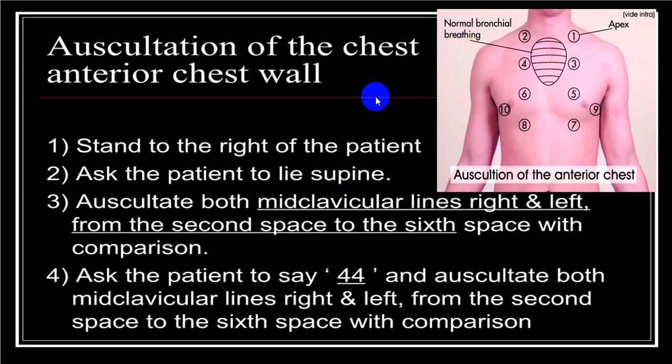Initially, while the patient breathes quietly, we look for: first, whether breath sounds are present or absent, or if intensity is increased. Second, we look at the character of the sound — whether it is normal vesicular breathing, bronchial breathing, or within bronchial breathing whether it is tubular or amphoric. Third, during inspiration and expiration, is there any adventitious sound such as crackles, ronchi, or pleural rub? After that, we perform vocal resonance — the auscultatory equivalent of tactile vocal fremitus.